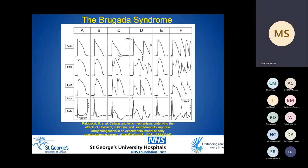In the canine wedge preparation, action potentials are recorded from different myocardial layers. Control recordings are shown, and then an Ito agonist is perfused with verapamil (a calcium channel blocker) to induce a slower action potential upstroke and peak amplitude, together with either shortened action potential duration in epicardial layer two or a pronounced notch and action potential prolongation in epicardial layer one. This leads to phase 2 re-entry between the epicardial layers. Isoprenaline co-perfusion then leads to homogenization of action potential morphology before washout and further arrhythmia, demonstrating the proposed mechanism of phase 2 re-entry between the epicardial layers as part of the repolarization theory.